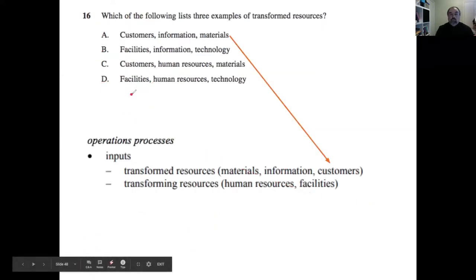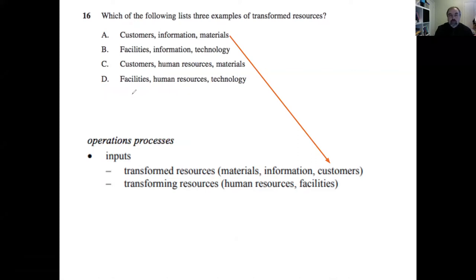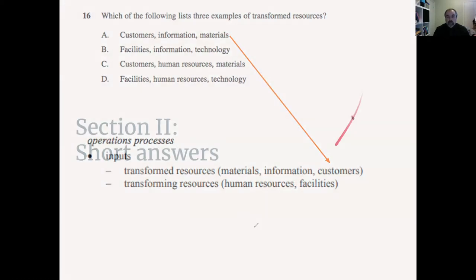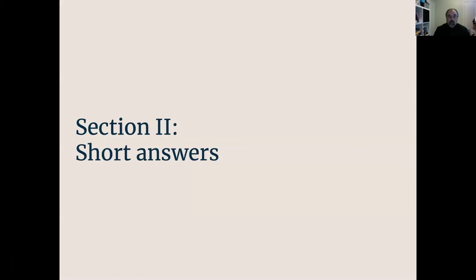Some multiple choice questions come directly from the syllabus. For example, 'What are transformed resources?' Under the Operations topic, inputs are split into transformed resources — materials, information, and customers — and transforming resources. Knowing the syllabus through techniques like the cloze passage makes these questions straightforward marks. This is why thorough syllabus knowledge is such a critical part of preparation.